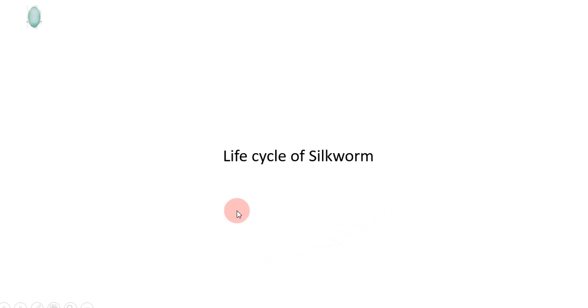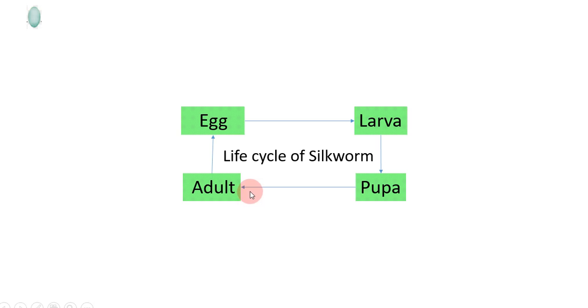Now we go to the life cycle of silkworm. There are four stages in the life cycle of silkworm: egg, larva, pupa, and adult.